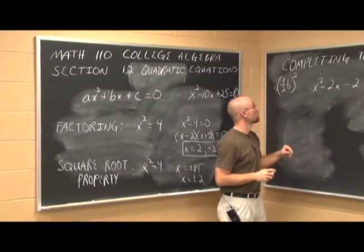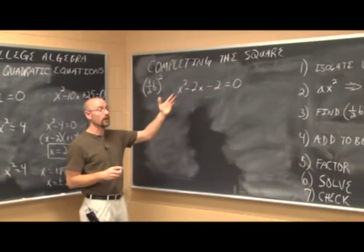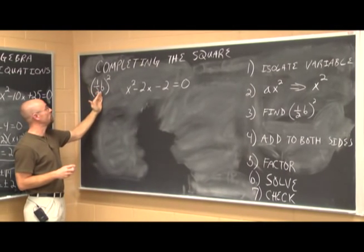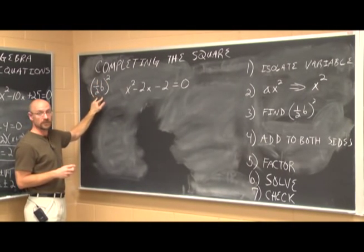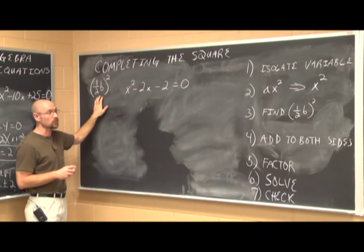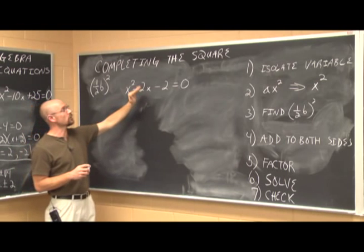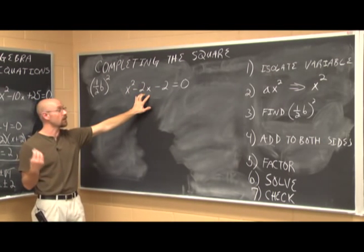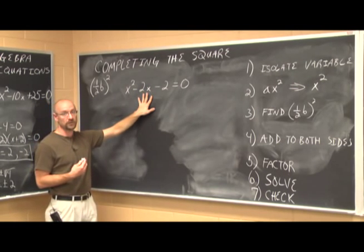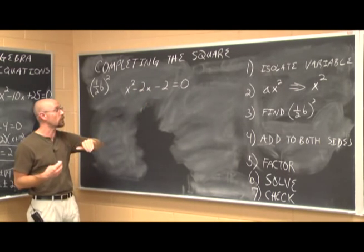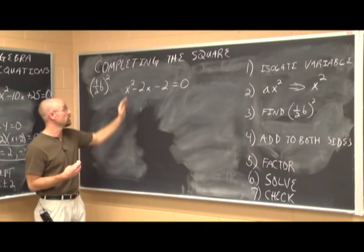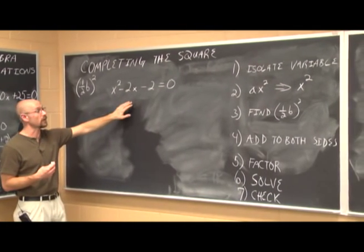The next method is completing the square. The key tool to memorize is: one half of b, quantity squared. In order to complete the square with this example, it doesn't factor and it's not a perfect square, so we can't use the square root property either. This is another method to solve a quadratic equation.